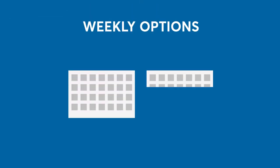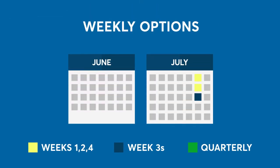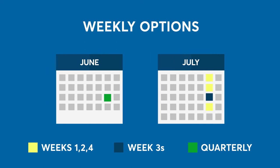Next, there are weekly options. At any given time, there will always be three Friday weekly options listed on the week 1, 2, and 4 rotating schedule, where no weekly Friday option will be listed if that Friday is the third Friday or the end-of-the-month option expiration date. In this example, since there is already a quarterly expiration in June, there is a weekly option expiration on the fourth Friday of June and the first and second Fridays of July. Since the July week 3 Friday would already be listed, when the June weekly options expire, a new weekly listing will be added on the fourth Friday in July.